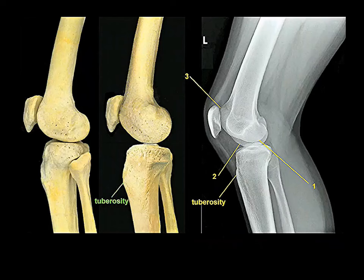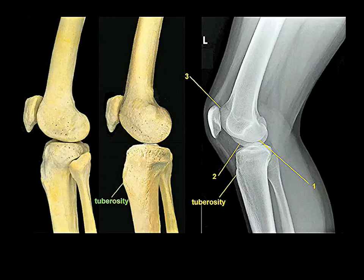This is a lateral view and this is a medial view of the knee. You can tell it's the lateral view because you can see the fibula — the fibula is on the lateral side and articulates with the lateral tibial condyle.